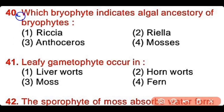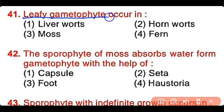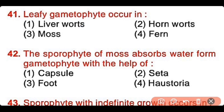Question number 40: Which bryophyte indicates the algal ancestry of bryophytes? Riccia, Rilia, Anthoceros, or mosses. The correct answer is option 3. Anthoceros indicates that bryophytes are originated from algae. Question number 41: The leafy gametophyte occurs in liverworts, hornworts, mosses, or ferns. The correct answer is option 3. Mosses have leafy gametophytes.